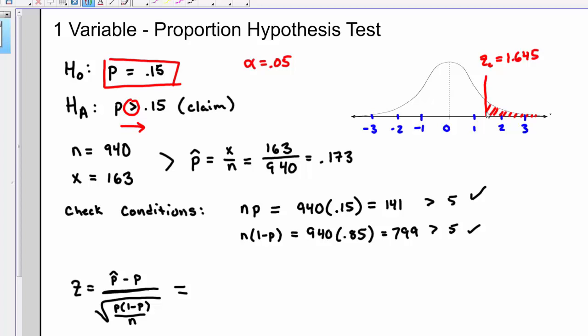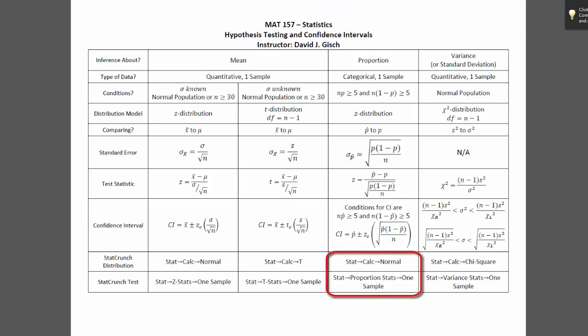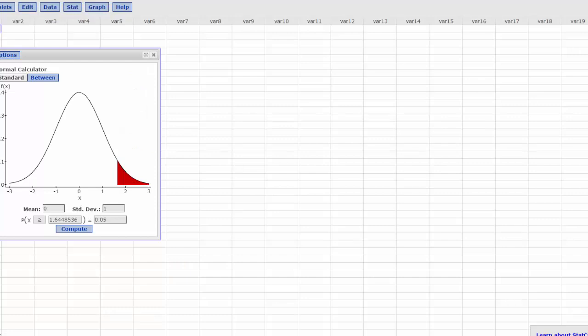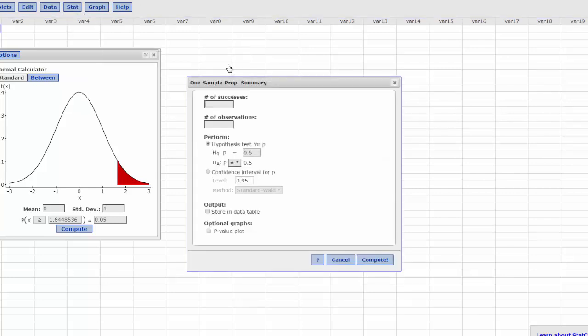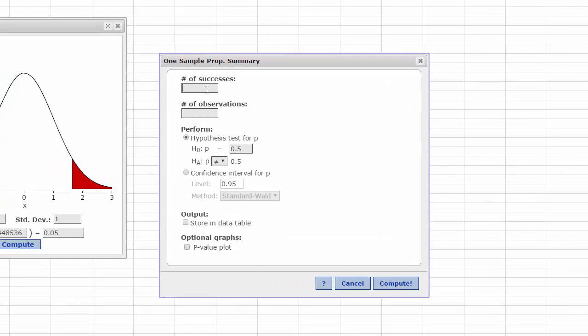Let's jump into StatCrunch and do this. If you don't remember where to go, use the formula sheet. The formula sheet in the very bottom says you're going to go to Stat, Proportion Stats, One Sample. So here I go. I'm going to do that. I'm going to go to Stat, Proportion Stats, One Sample. This has a summary of data. We don't have a whole list of data. We just get the summary, the 163 out of 940. Number of successes, that's the 163. There were 940 observations. This is my null, 0.15. Make sure this gets pointed the right way, greater than. And there we go.